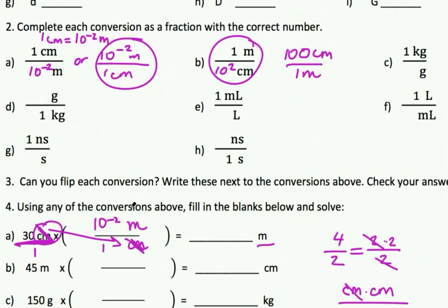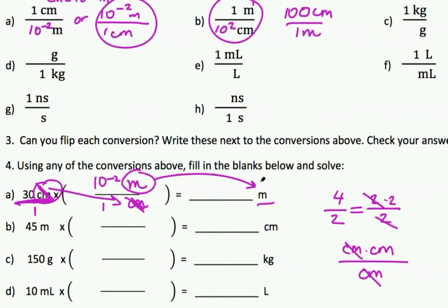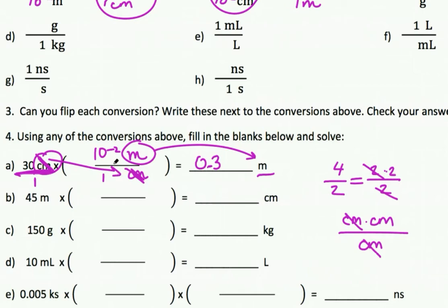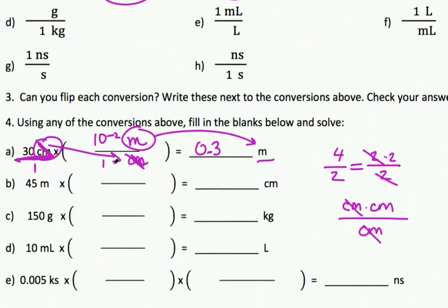So here's my centimeter, it's going to cancel out with my centimeter down here, and so my answer is going to be in meters. That's why I end up with the meters. So my answer is going to be 30 times 10 to the minus 2, and so that's going to be the same as moving the decimal place to the left twice. So I'm going to have 0.3.